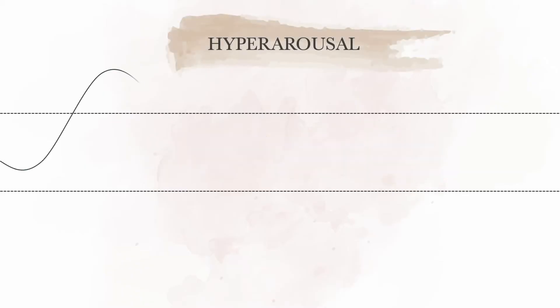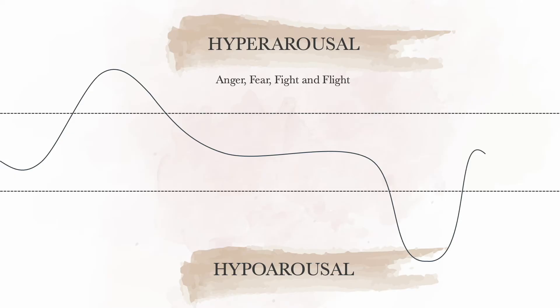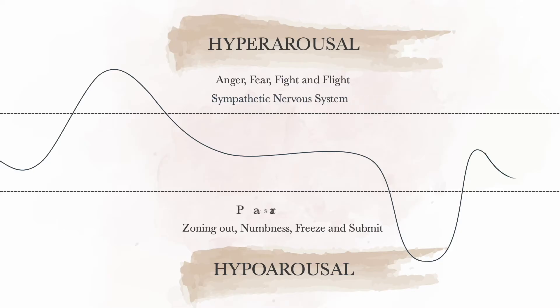Many of you will have come across trauma models of the autonomic nervous system. They typically describe two types of arousal: hyperarousal, associated with anger, fear, and their related defense responses — fight and flight — and hypoarousal, associated with zoning out, numbness, freeze, and the submit response. These activating and deactivating states are assumed to arise from sympathetic nervous system and parasympathetic nervous system dominance.